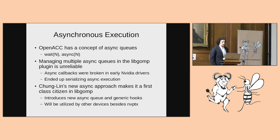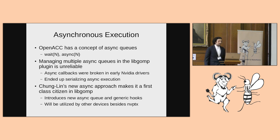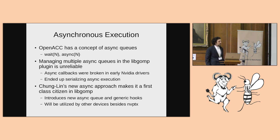The next big change involves asynchronous execution. In OpenMP there's only one asynchronous queue. With OpenACC it's better suited for GPUs — for an NVPTX target using CUDA, it has a concept of multiple streams of execution. You can think of a stream as an offloaded function or program, and you can run multiple GPU programs at any given instance.